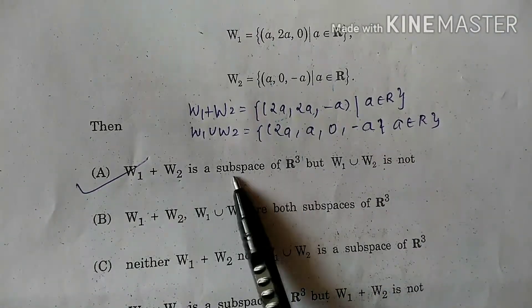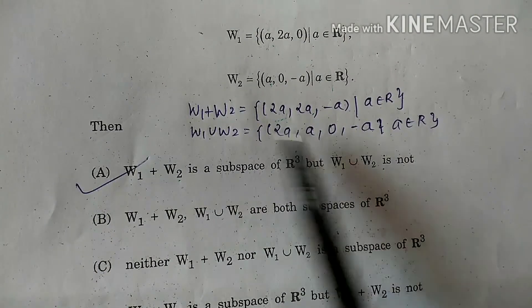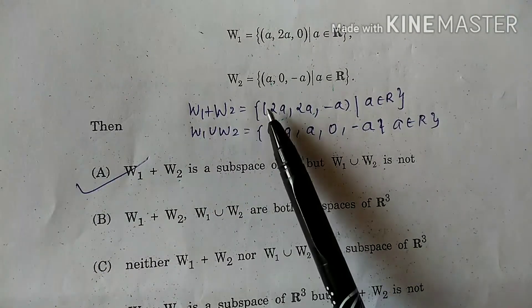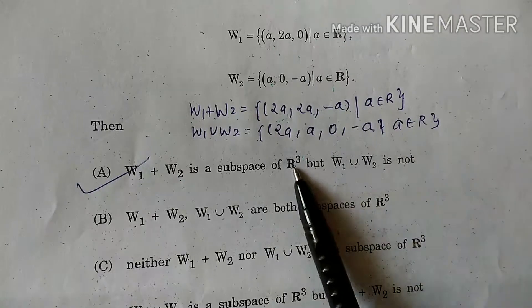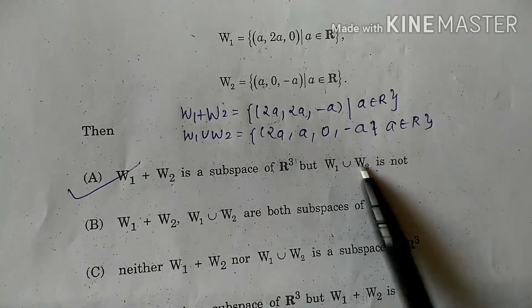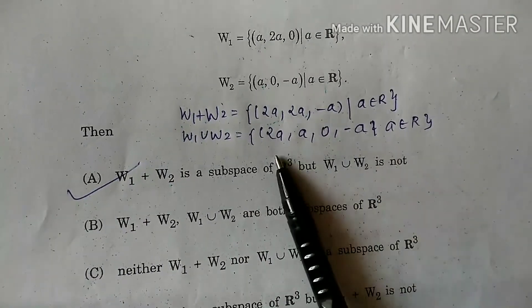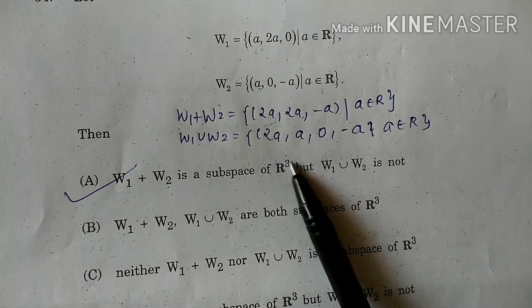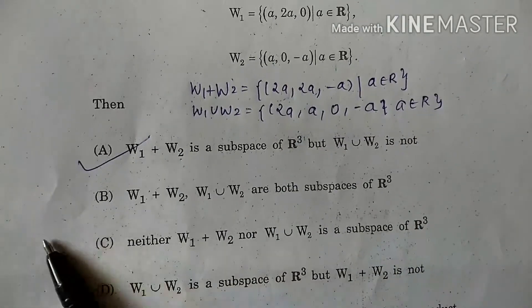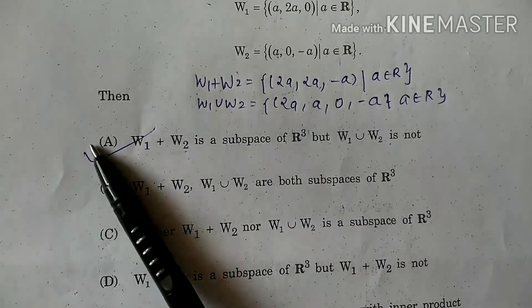But W1 union W2 is not, because these are 4 dimensions. So this is not R³. It will not be the dimension of R³. We can see all the options here. So this is correct.